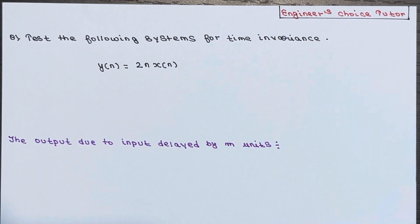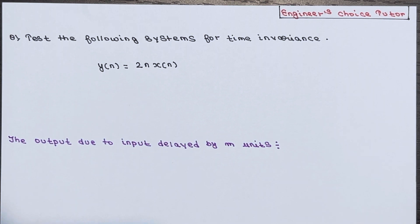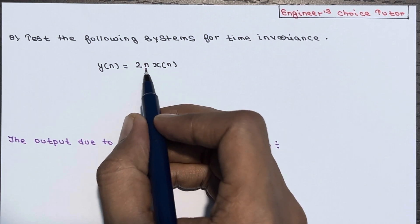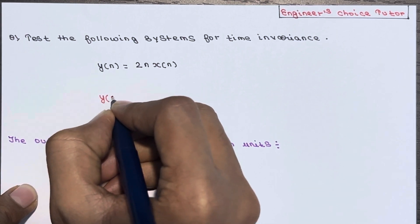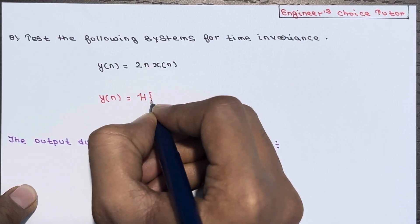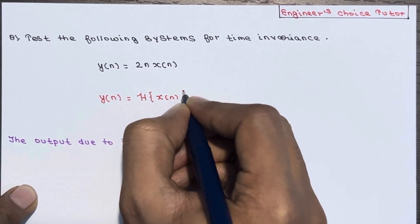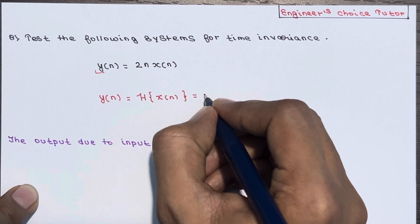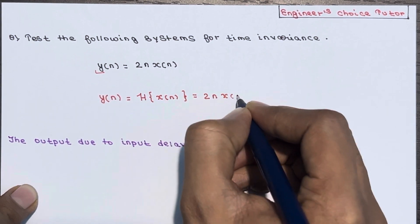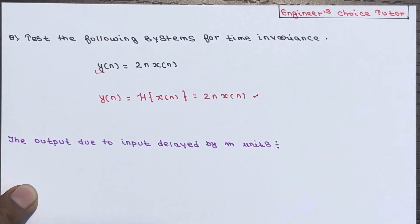In this lecture, we will see a problem based on time invariant or time variant systems. The question is: test the following system for time invariancy. The system equation is given as y(n) = 2n·x(n). The general expression is that y(n) is the transform of x(n), so y(n) = 2n·x(n). Remember this point.